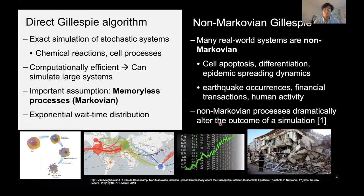The direct-Gillespie algorithm is used for exact simulations of stochastic systems, for example chemical reactions or cell processes. It is computationally efficient, so it can be very powerful for simulating large stochastic systems. However, it follows an important assumption where all the processes involved have to be memoryless processes, i.e. Markovian processes. And hence we expect all the reactions to follow an exponential waiting time distribution.